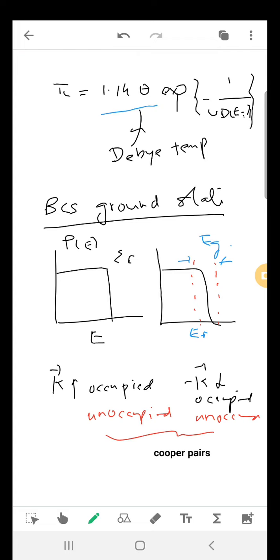Whereas at T greater than 0, there is a slight variation in the density of states falling to 0.